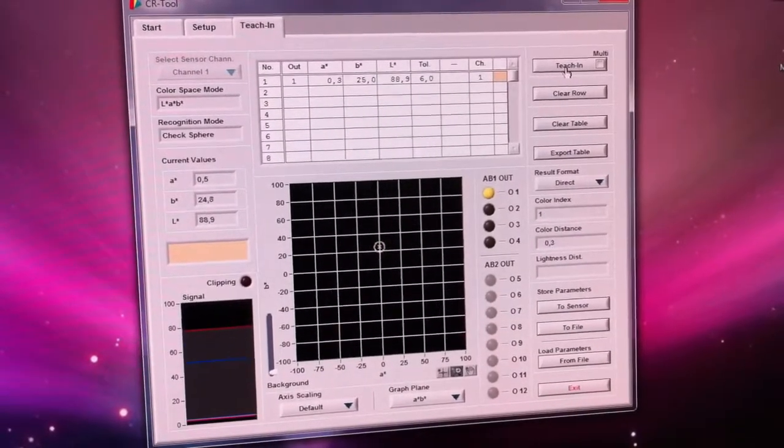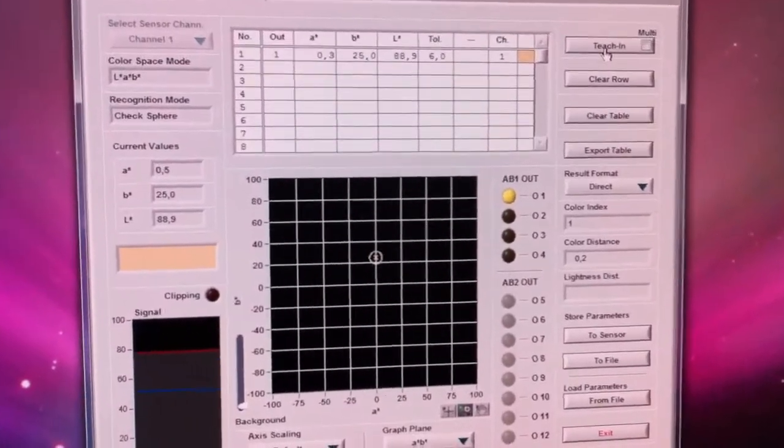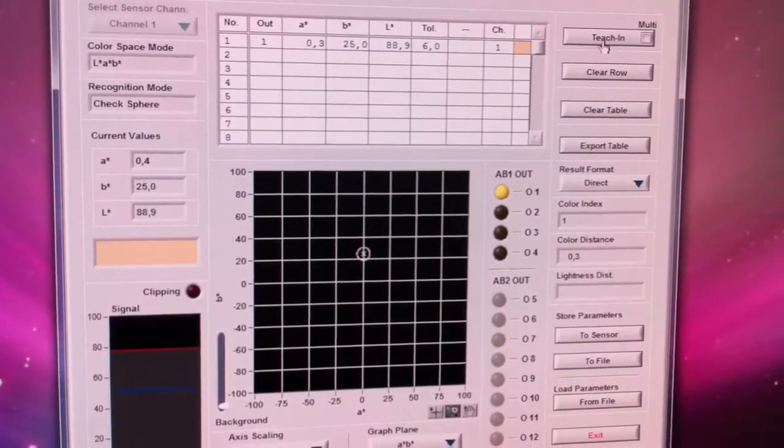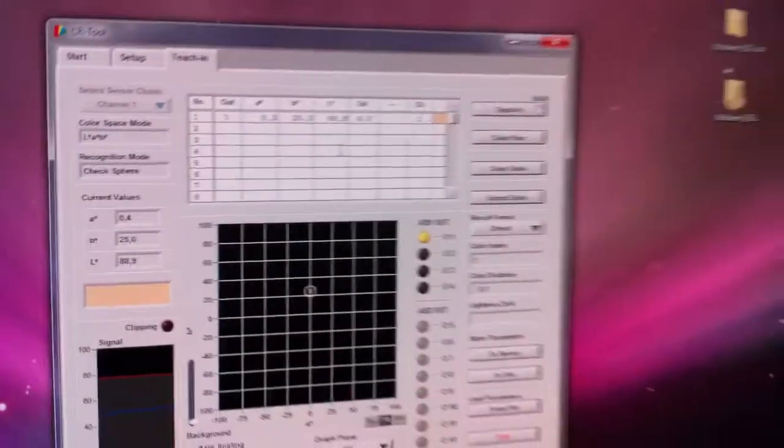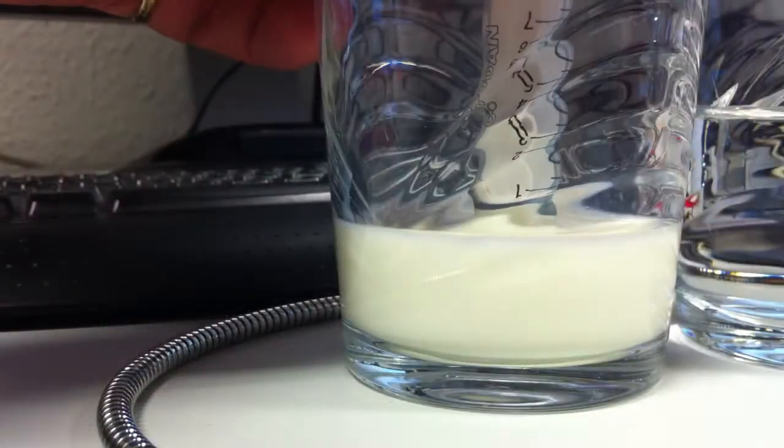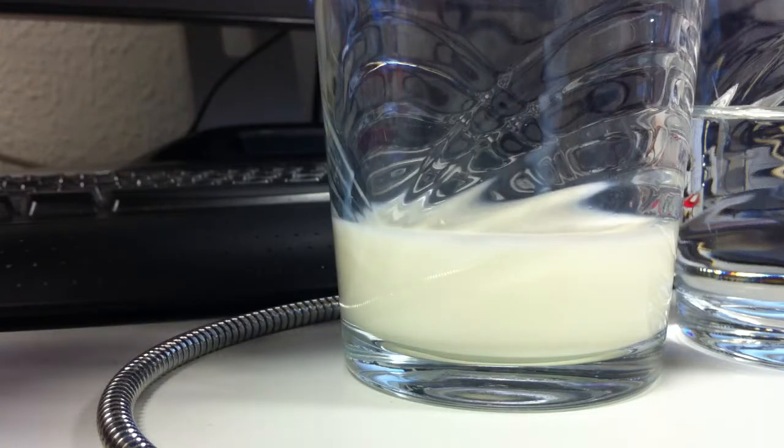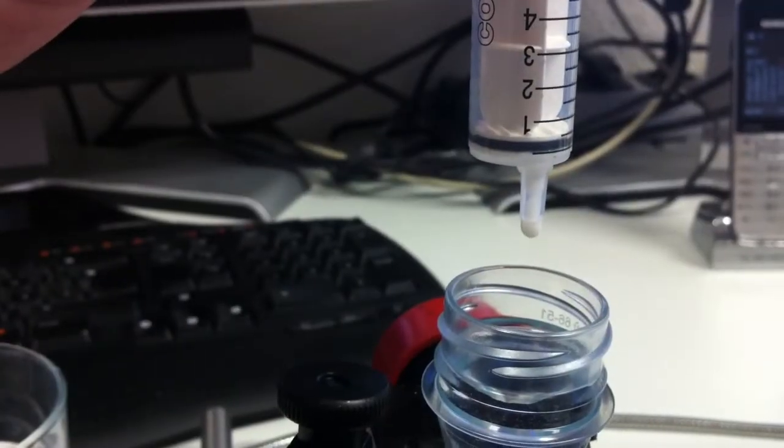So now it's stored and you see on the right side there's a color distance shown. It's 0.1, 0.3, that's the normal deviation.